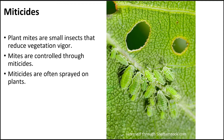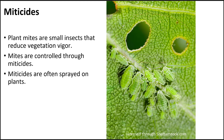Mites are very small insects, difficult to see, that reduce plant health through feeding on the plant. You can see the evidence of these mites feeding by the holes in the leaf on this plant. Where insects have six legs, mites have eight. They're controlled using miticides, which are different from insecticides.